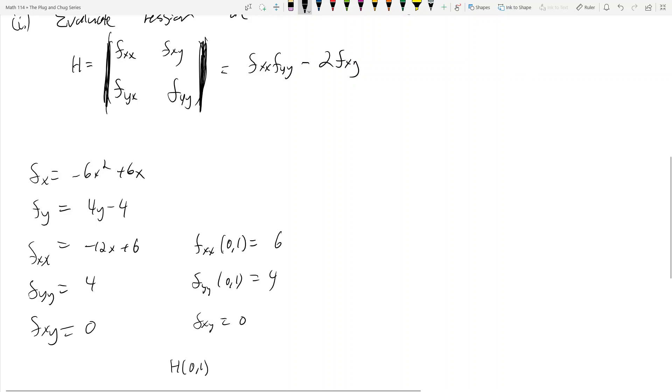f sub xx at 1, 1 equals negative 6. f sub yy at 1, 1 equals 4. And f sub xy is going to be 0. So the Hessian at 1, 1 is going to be negative 24.